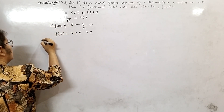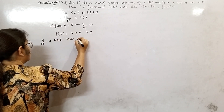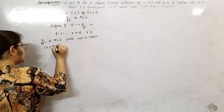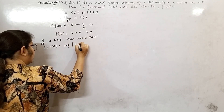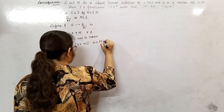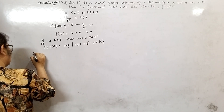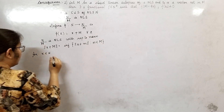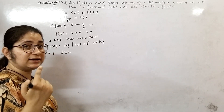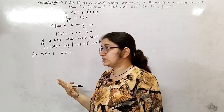N/M is a normed linear space with respect to the norm: the norm of x plus M equals the infimum of the norm of x plus m, for m belonging to capital M. With this norm, N/M is a normed linear space. Now, for x belonging to N, we see that φ of x is linear. We are going to show that it is bounded, from which continuity will follow, and we will derive further results.